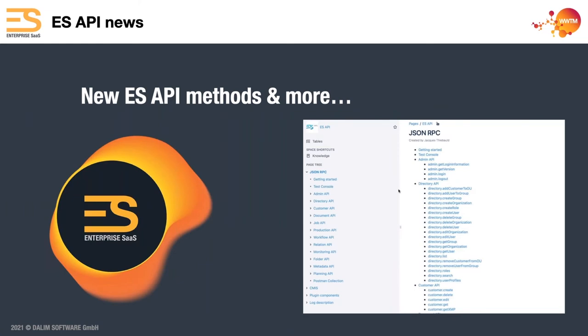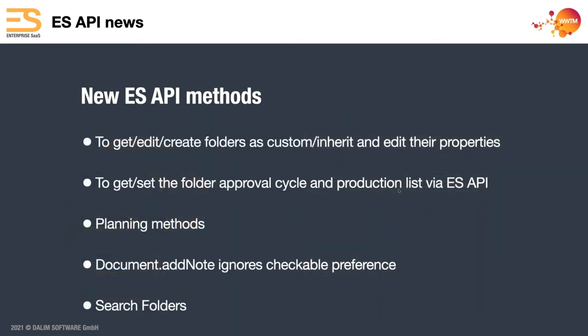There are new ES API methods — something we'd probably cover in a future webinar. The basics include get, edit, and create folders; change approval cycles on the folder; change planning methods; and search folders. They are adding to the API and keeping up with demands on it, though still nothing on versions and sections.